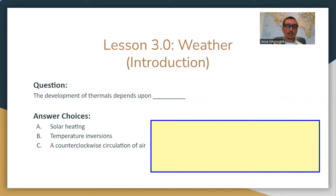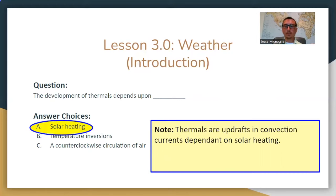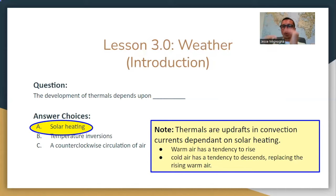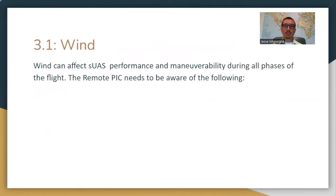The development of thermals depends on solar heating, which gives us thermals or updrafts in convection currents. Warm air has a tendency to rise; cooled air has a tendency to descend, replacing the rising warm air. When there's warm air below cool air, warm air wants to rise — that's when you get these vertical wind conditions, which creates turbulence. That's something you definitely want to be concerned about.